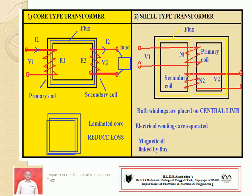As per construction, we have two types of transformers. First is the core type transformer, which consists of a magnetic core, two windings, and a laminated structure. Second is the shell type transformer, which has three limbs — three vertical parts. On the central limb, both the primary and secondary windings are placed. Both windings are electrically separated, but they are linked by the magnetic circuit in both core type and shell type transformers.